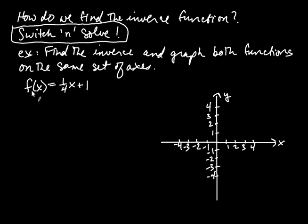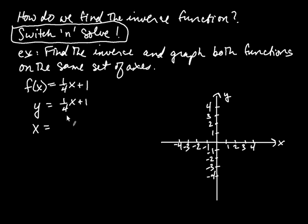Here's what you do. You first replace f(x) with y, so y equals (1/4)x + 1. Now you employ the technique. First, you switch — you literally just change y to x and x to y. So where y was, you replace it with x, and where x was, you replace it with y, giving you x equals (1/4)y + 1. That is the switch part of switch-and-solve.